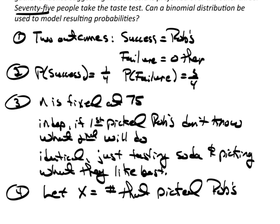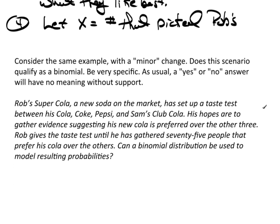So let's change this scenario just a little bit. Can we use this new scenario or under the circumstances of this new scenario, could we use it with a binomial? So it's a new soda in the market has set up a taste test between his cola, Coke, Pepsi, and Sam's Club. His hopes are to gather evidence suggesting that his new cola is preferred over the other three. Rob gives a taste test until he has gathered 75 people that prefer his cola. Can a binomial distribution be used to model the resulting probabilities?